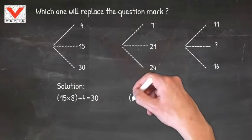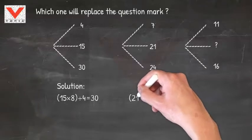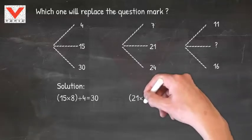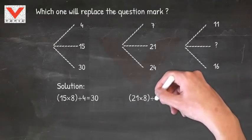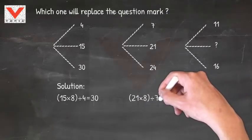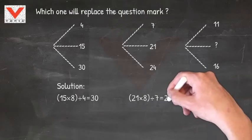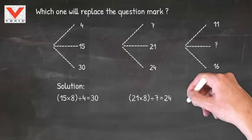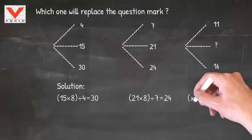In the second stage, multiply the numbers 21 and 8 to get 168, then divide by 7 to get 24.